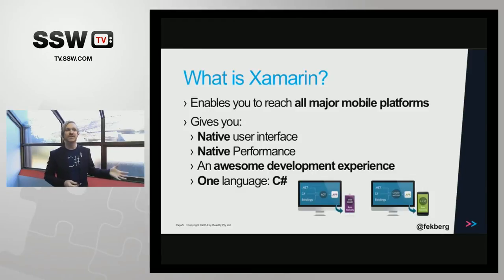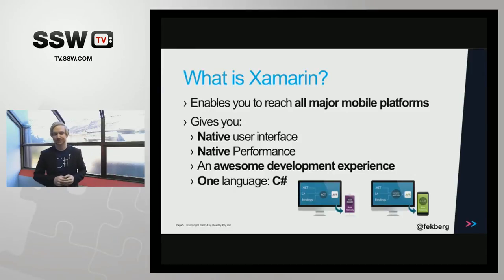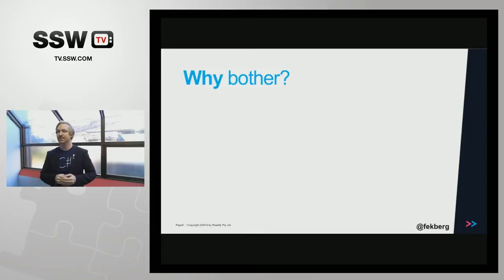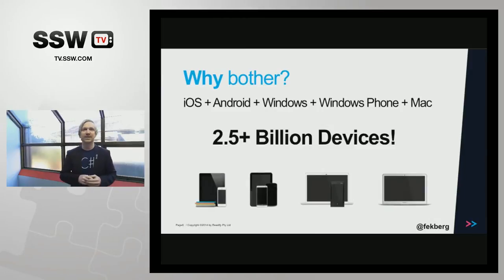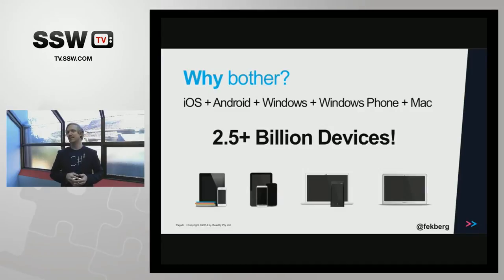The code you write in C# is compiled down to the native executables. For iOS devices, that's going to be the IPA file. For Android, which has a Mono runtime, it's compiled down to IL and then we have the APK file, which is JIT compiled on the Android device. So why would you bother doing Xamarin? It's one simple answer: all these devices combined reach 2.5+ billion devices.